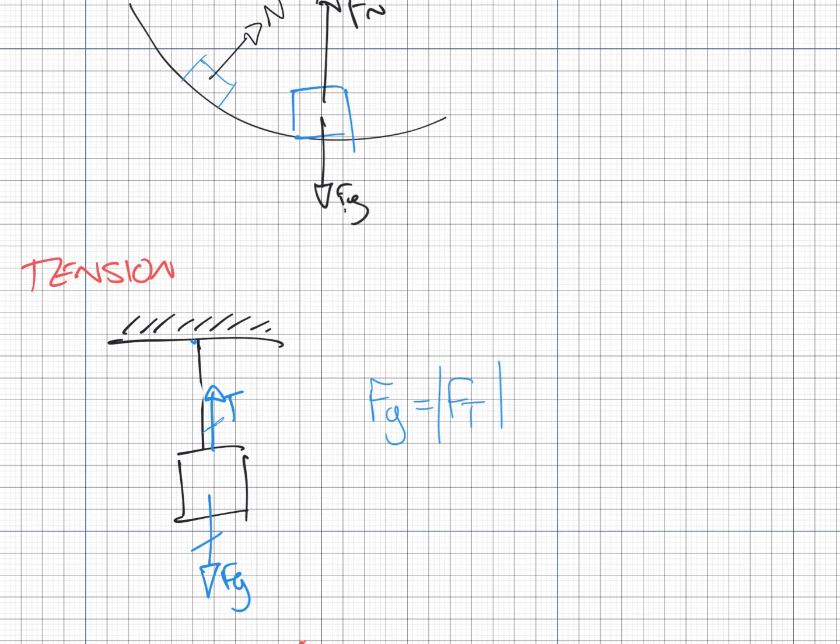Their magnitudes are equal but they're in opposite directions. Because an object is at rest, the net force is zero and all the forces balance out. This takes us into Newton's first law.